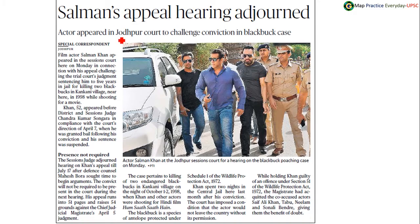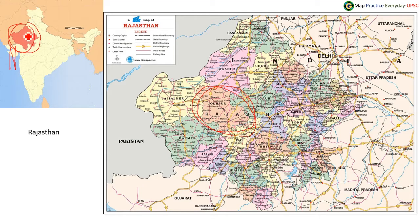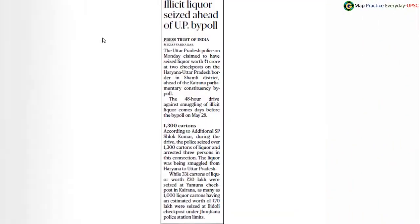Salman's appeal hearing adjourned — the actor appeared in Jodhpur court to challenge conviction in the blackbuck case. Jodhpur court is located in Jodhpur, Rajasthan, which lies in the western part of India. The capital city of Rajasthan is Jaipur, located here, and Jodhpur is located in this part of Rajasthan on the map of India.